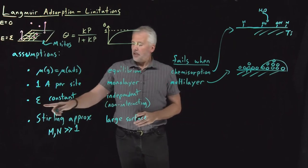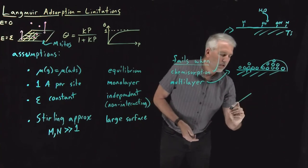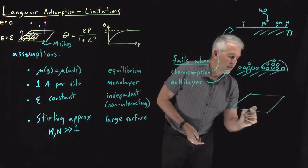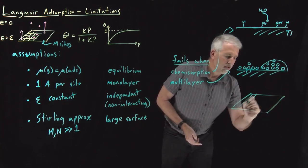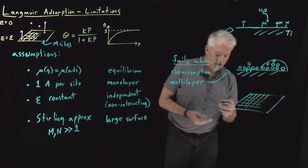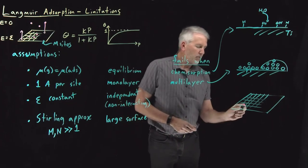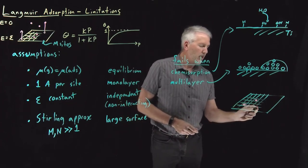This third assumption that the binding is independent. Let me draw a picture like this to talk about that. So here are my binding sites on the surface. For a small number of adsorbed species, I've got one here, one here, one over here perhaps.